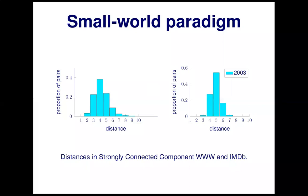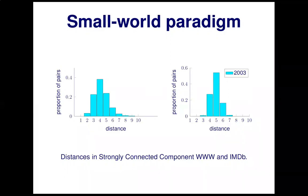Many of these networks satisfy the small world paradigm, and this is quite different from the types of graphs we're used to. For example, in a square lattice on Z², with n vertices, the graph distance between two random vertices is of order the square root of n. In the Internet Movie Database with roughly a million vertices, that would be roughly a thousand, but you actually see distances much, much smaller than this. So there's something special happening.